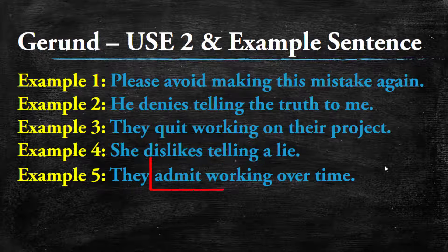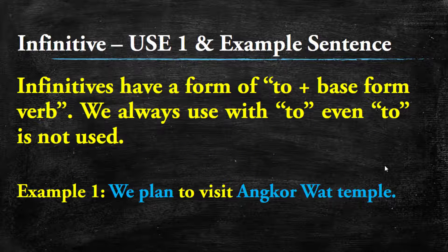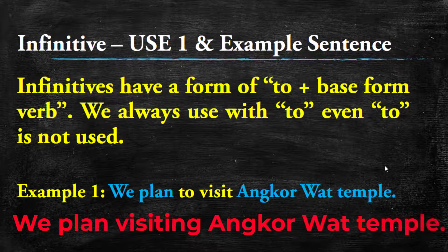Infinitive use one: an infinitive has the form 'to' plus the base form of a verb, for example 'to work.' We always use 'to' even when it does not carry its own meaning. Example: 'We plan to visit the world temple.' In this sentence 'to visit' is an infinitive. We cannot use a gerund here — we cannot say 'We plan visiting the world temple.'